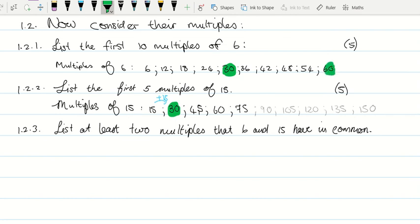So I would say common multiples. So I would write my answer: common multiples of 6 and 15, and then my answer will be 30 and 60.